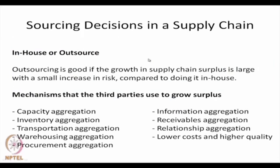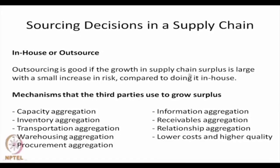The second aspect of supply chain management to study is sourcing decisions — from whom to get our components or raw materials. The first question is whether to buy components from outside (outsource) or to make them in-house: the make-or-buy decision. Similar principles to those studied in engineering economics are applied. Outsourcing is good if the growth in supply chain surplus is large with a small increase in risk compared to doing it in-house.